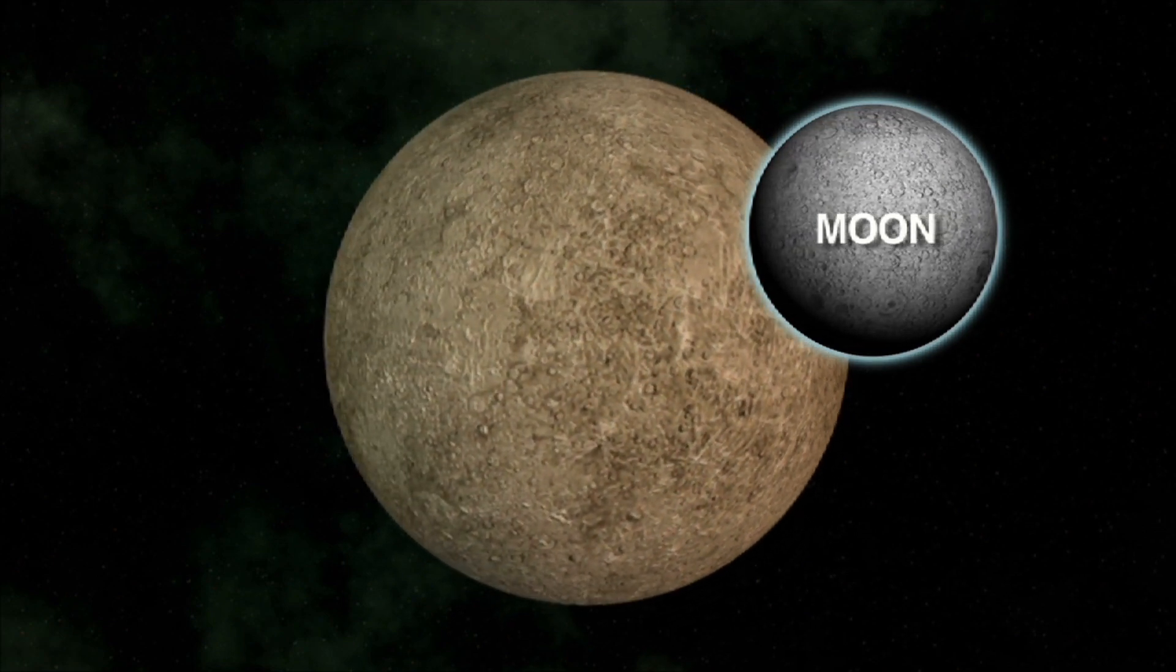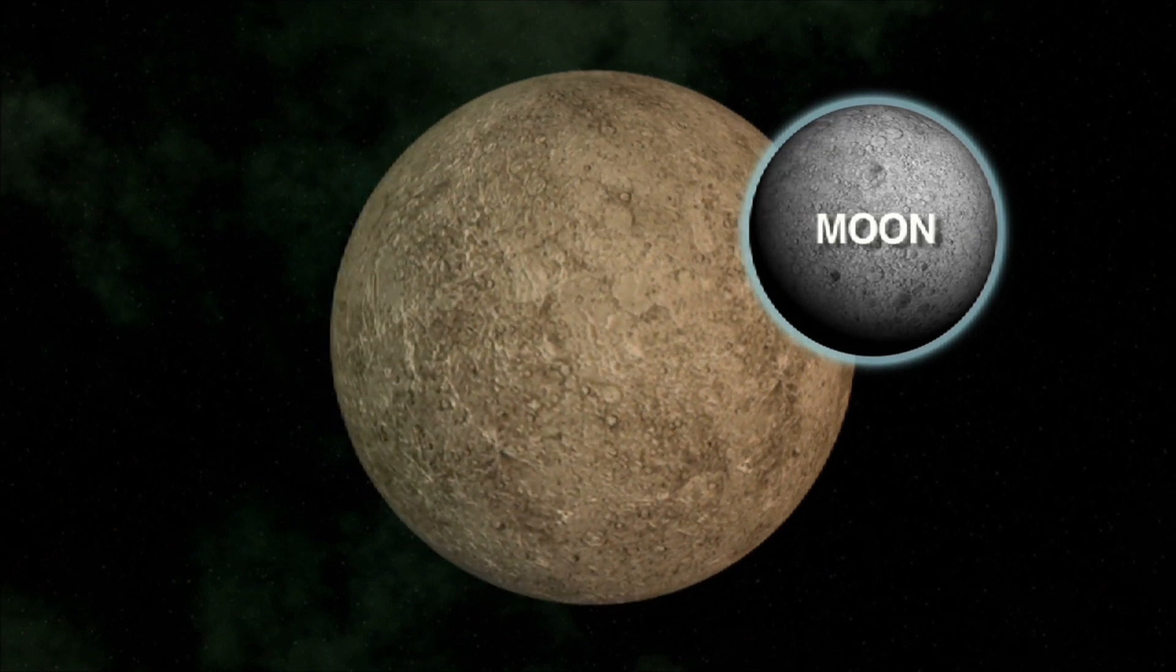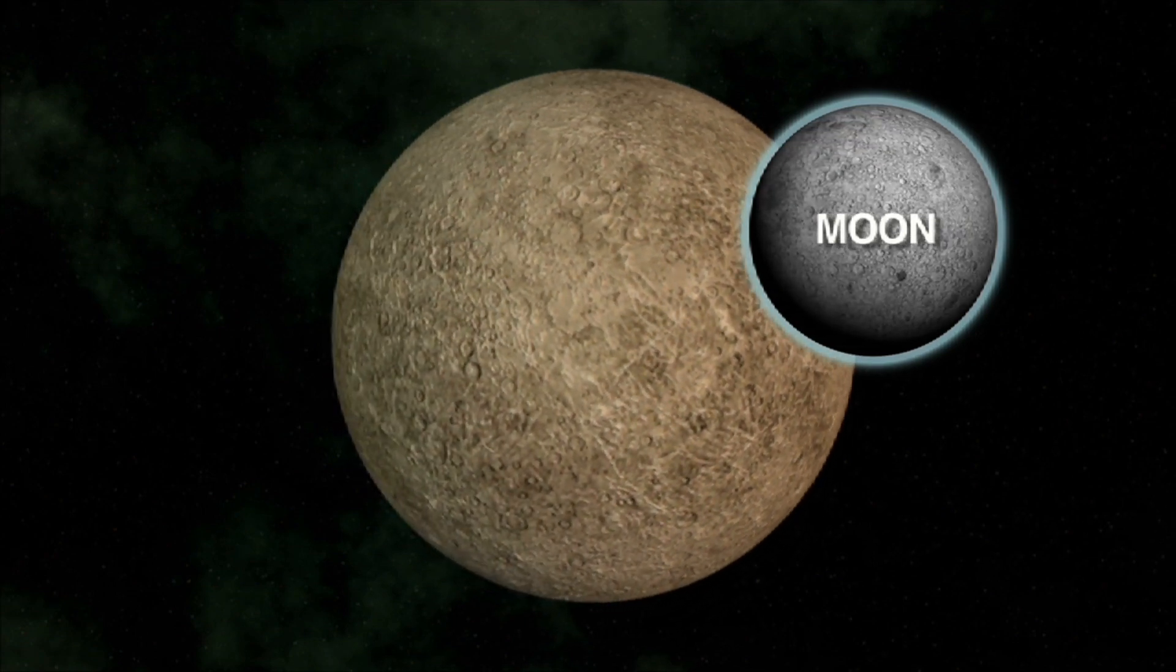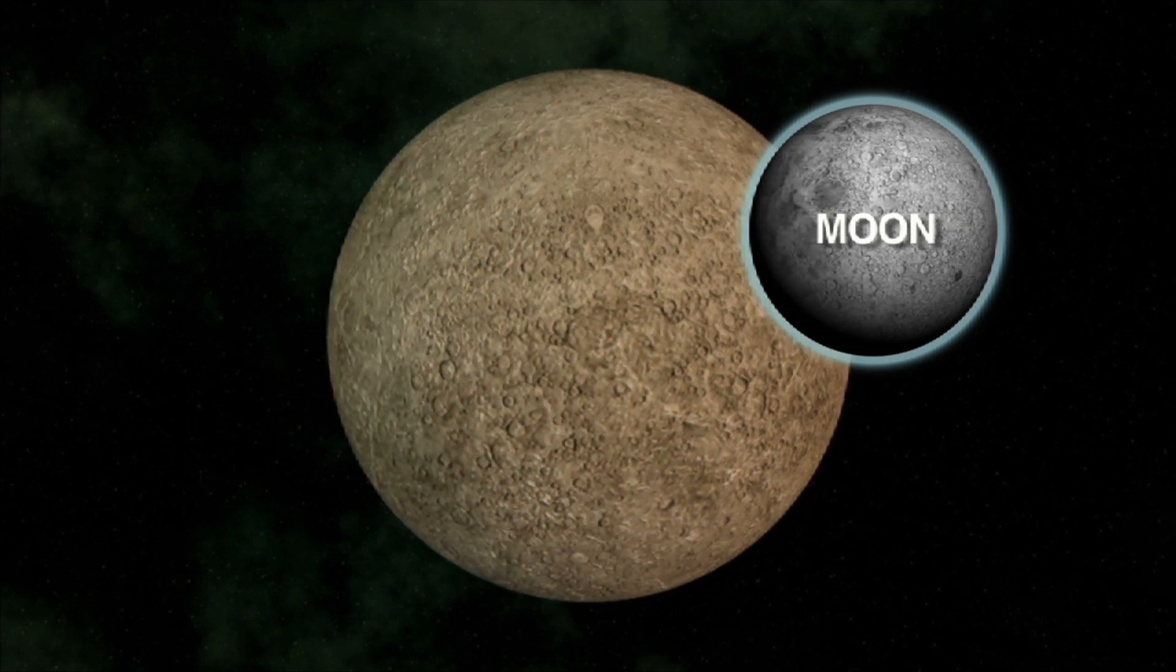Mercury also doesn't have an atmosphere, like our moon. So there is no wind, water, or weather on its surface.